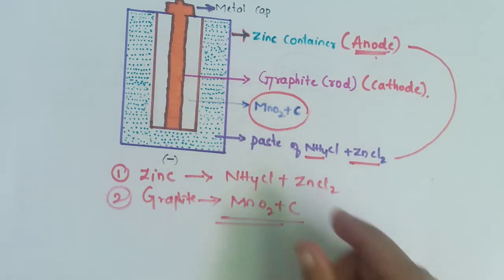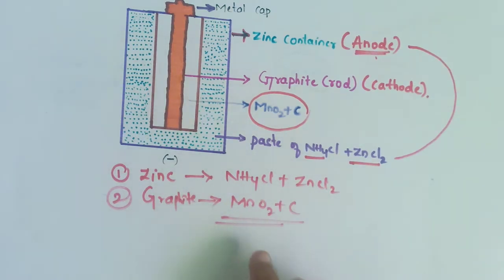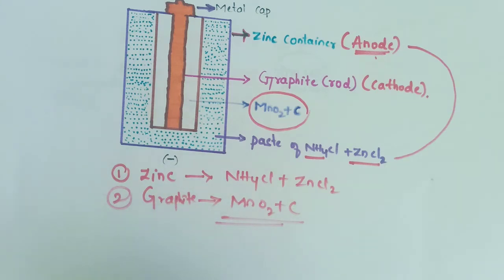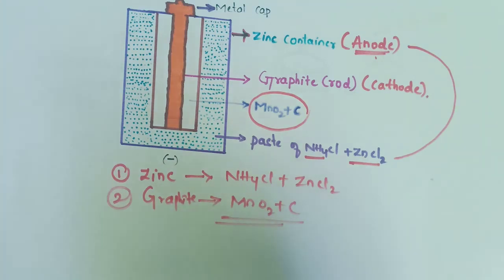The reason carbon is used here is that the conductivity of MnO2 is low. So granulated carbon — that is, powdered carbon — is used to increase the conductivity of manganese oxide.